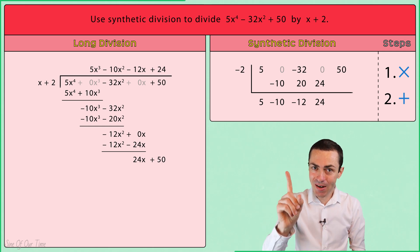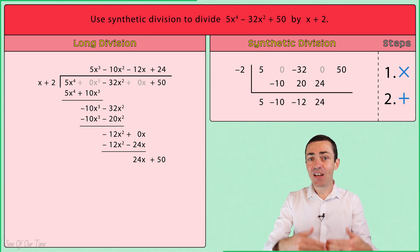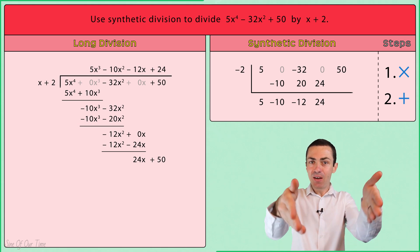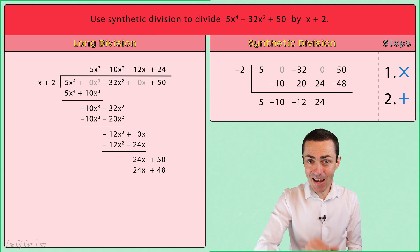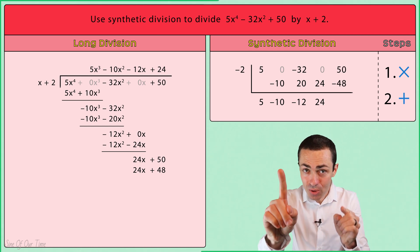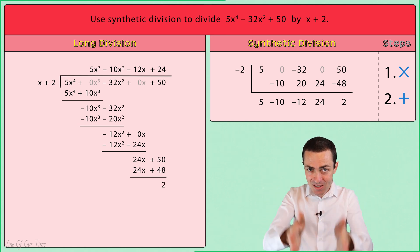Again, step one, multiply. We take negative 2 and we multiply it by positive 24 in order to give us negative 48, which we write one column over beneath 50. Then step two, we add. We take that 50, we add negative 48, which gives us 2, which we write below the synthetic division symbol in the same column.